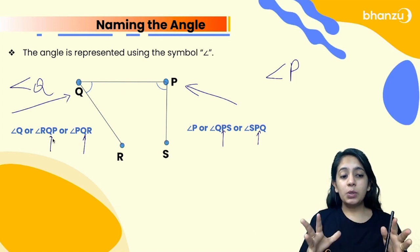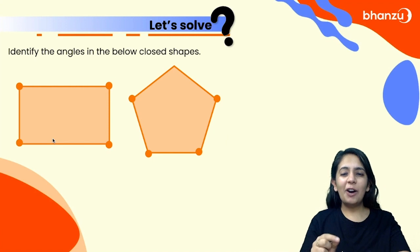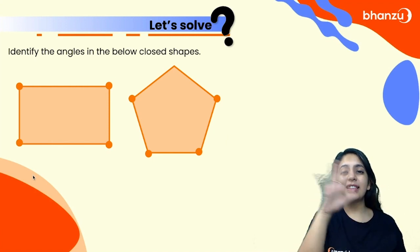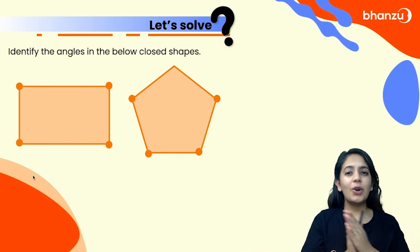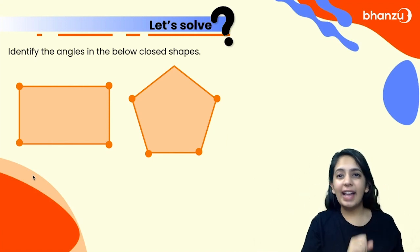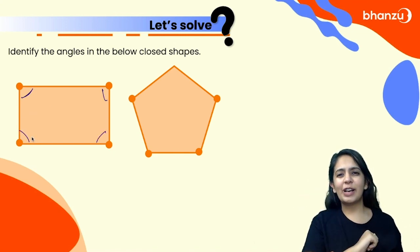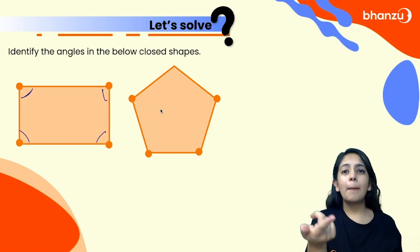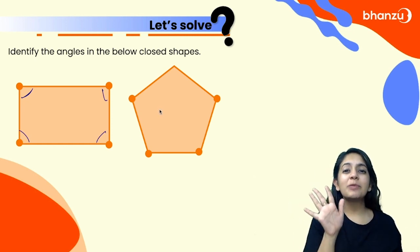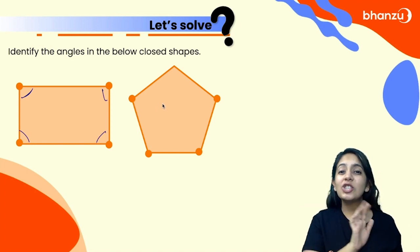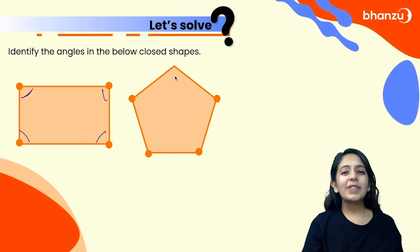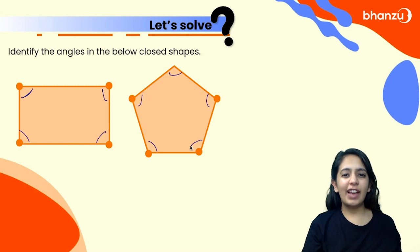Now try to identify the angles in these shapes. How many angles are there in a rectangle? There are one, two, three, four — four angles. And how many angles are there in a pentagon? A pentagon is a five-sided polygon, that is a five-sided closed shape. So there are five angles: one, two, three, four, and five.